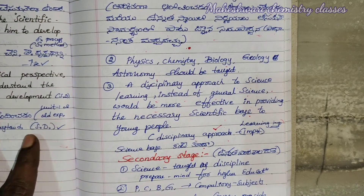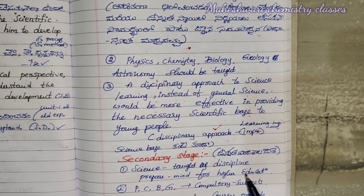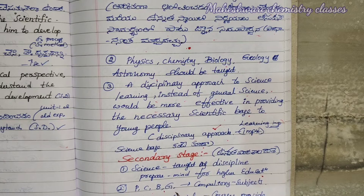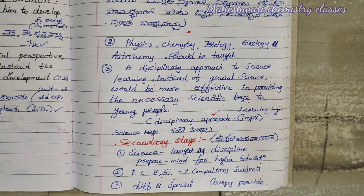Secondary stage. First one: science taught as a discipline, to prepare the mind for higher education. Physics, chemistry, biology, geology, etc. There are different courses — special courses that will be provided.